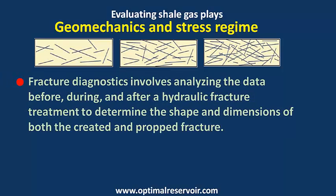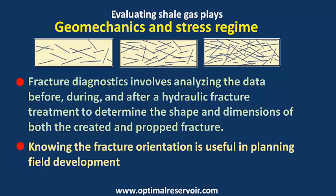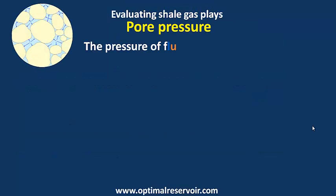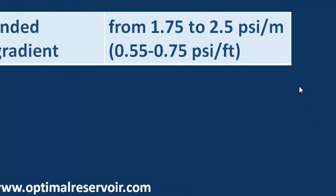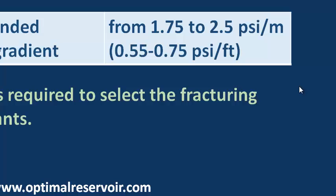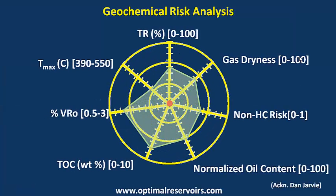Fracture diagnostics involves analyzing data before, during, and after a hydraulic fracture treatment to determine the shape and dimensions of both the created and probed fracture network. Knowing fracture orientation is useful in planning field development. Pore pressure — the pressure of fluids within the pores of the reservoir, usually hydrostatic — has a recommended pressure gradient of 1.75 to 2.5 pounds per square inch per meter, which is required to select fracturing fluids and proppant to calculate sweet spots.